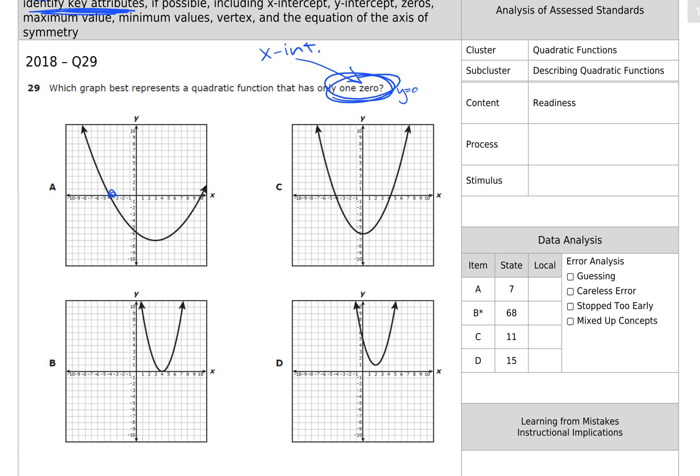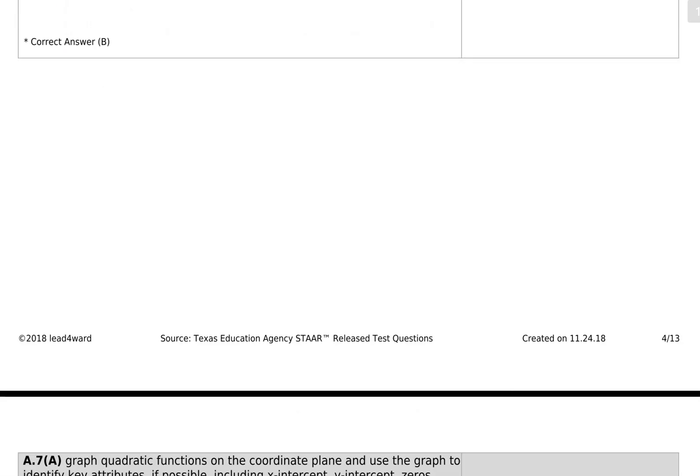Now, how many zeros, given that definition, does A have? It has two, so A is not the answer. We're looking for the one that has only one zero. B, how many zeros does B have? Well, looks like it only has one, that's probably the answer. C has two, D has none, no zeros, so the answer is B. Alright, moving on.